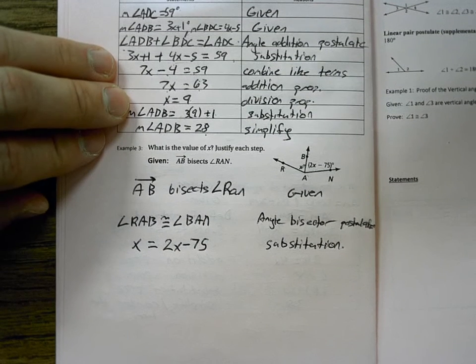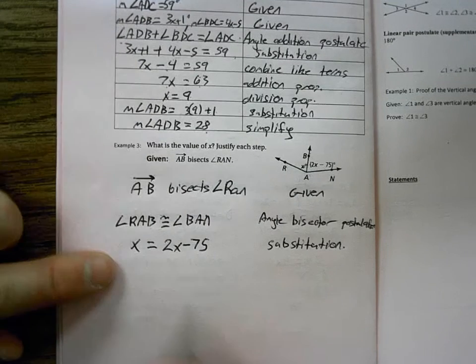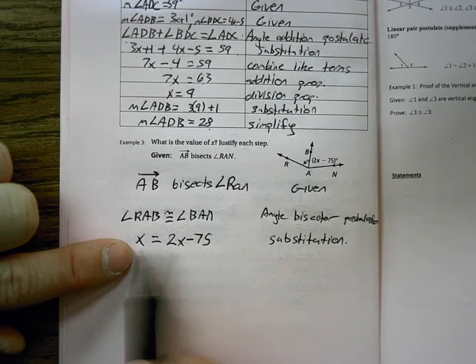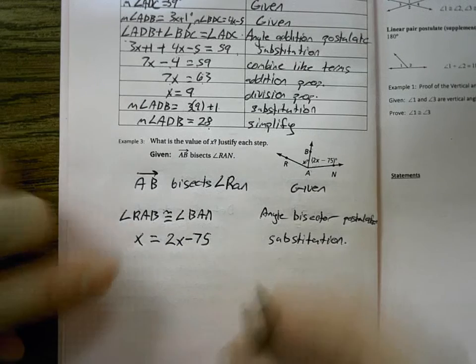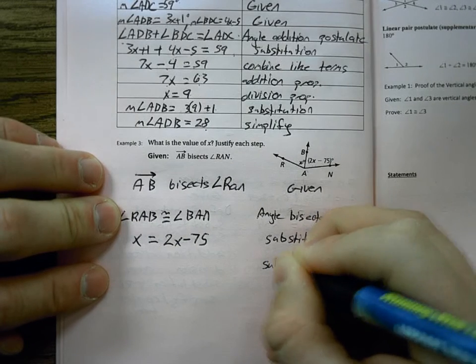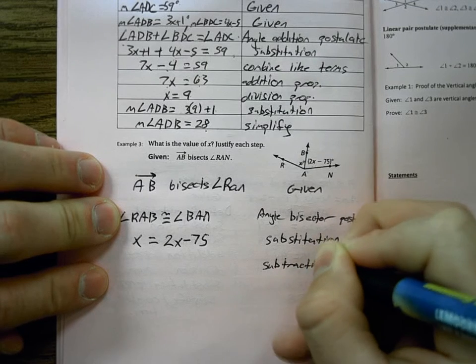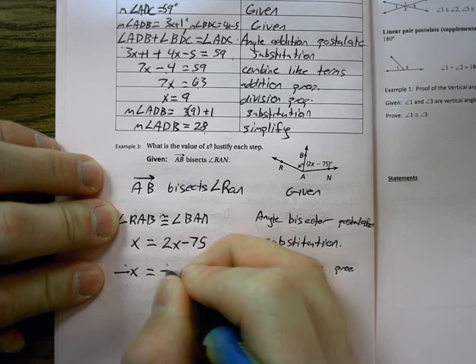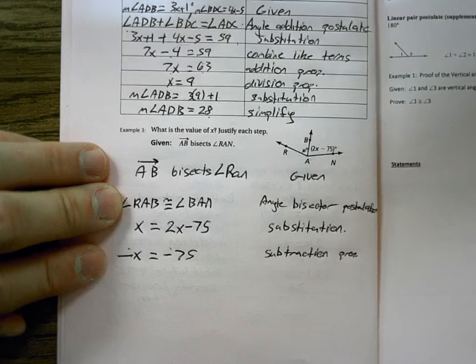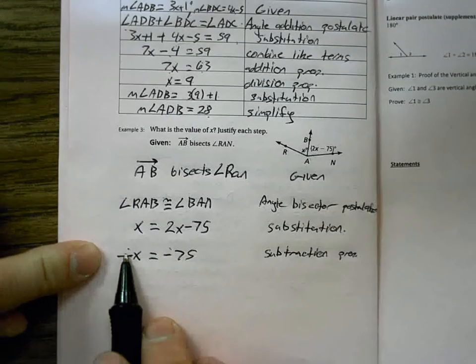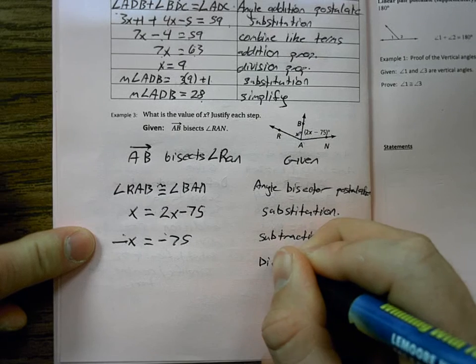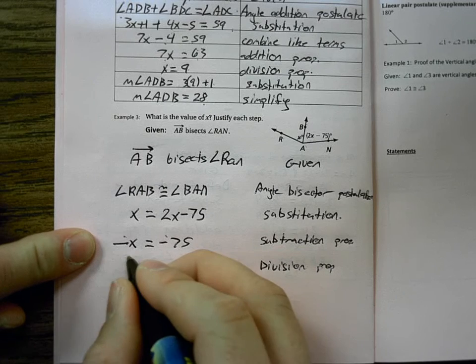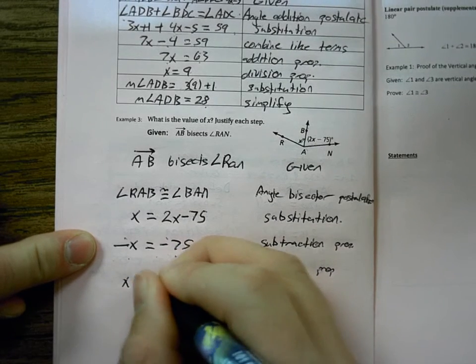I've got to solve for X. What's my step? Minus 2X? Okay. Subtraction property. If I subtract 2X on both sides, I get negative X equals negative 75. Not done here. Can't have negative X. Can I divide by negative 1? Yep. Division property. I'm going to divide by negative 1 on both sides. So X equals 75 degrees.